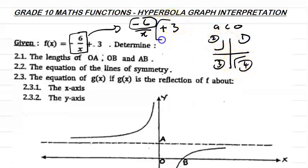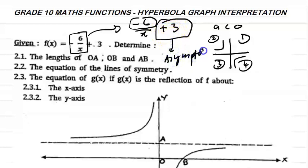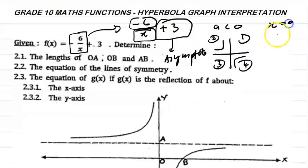Number two: you see this part over here — plus 3. This plus 3 part is an asymptote. An asymptote is a line that your function goes close to but does not touch. Now the hyperbola has two asymptotes. One asymptote is going to be x equals to 0, and the other one is going to be y equals to 3. So x equals to 0 and y equals to 3 are the equations of your asymptotes for this question.